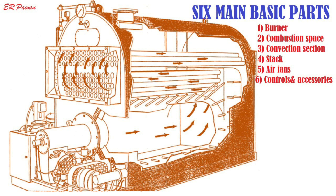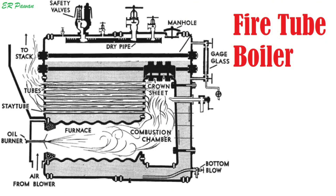Let's start with the fire tube boiler. Hot flue gases flow inside tubes that are submerged in water within a shell, where pressure is up to about 10 bar, producing up to 14 tons of steam per hour. It can meet wide and sudden load fluctuation because of large water volumes and is usually rated in HP.